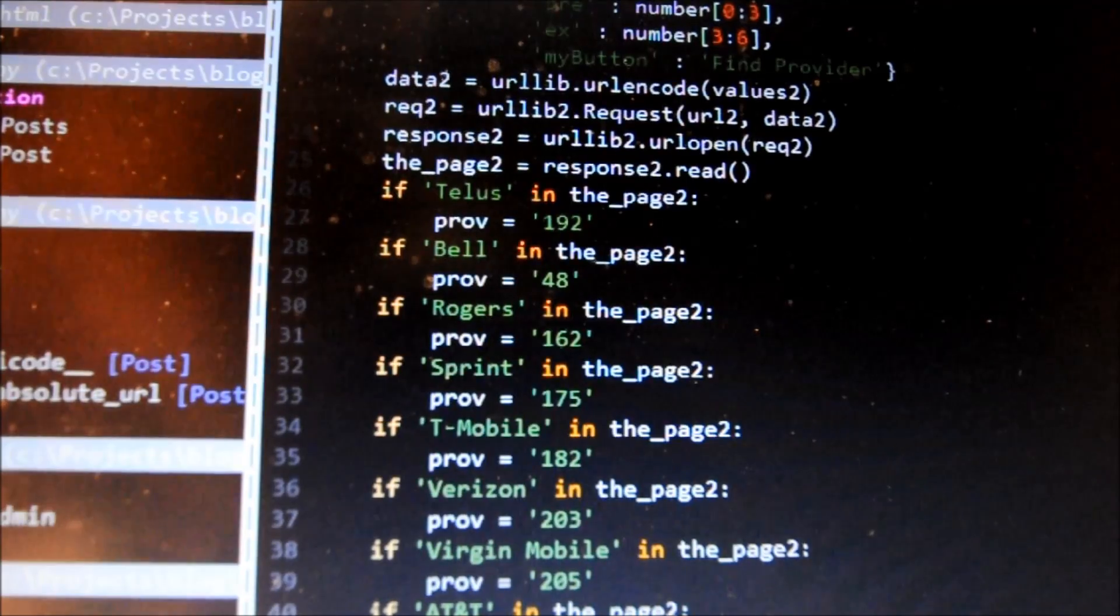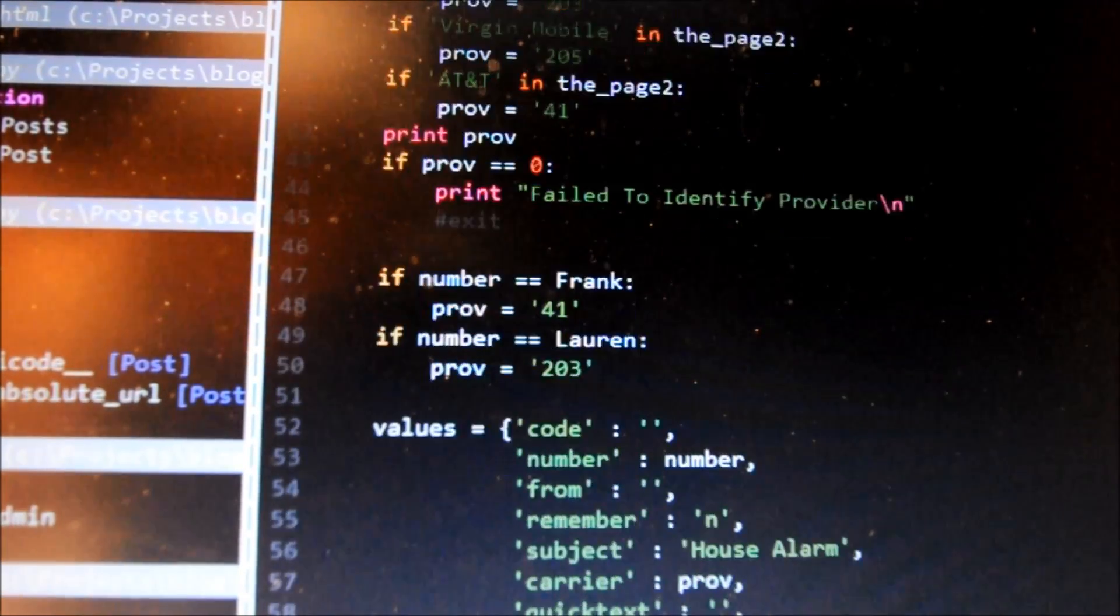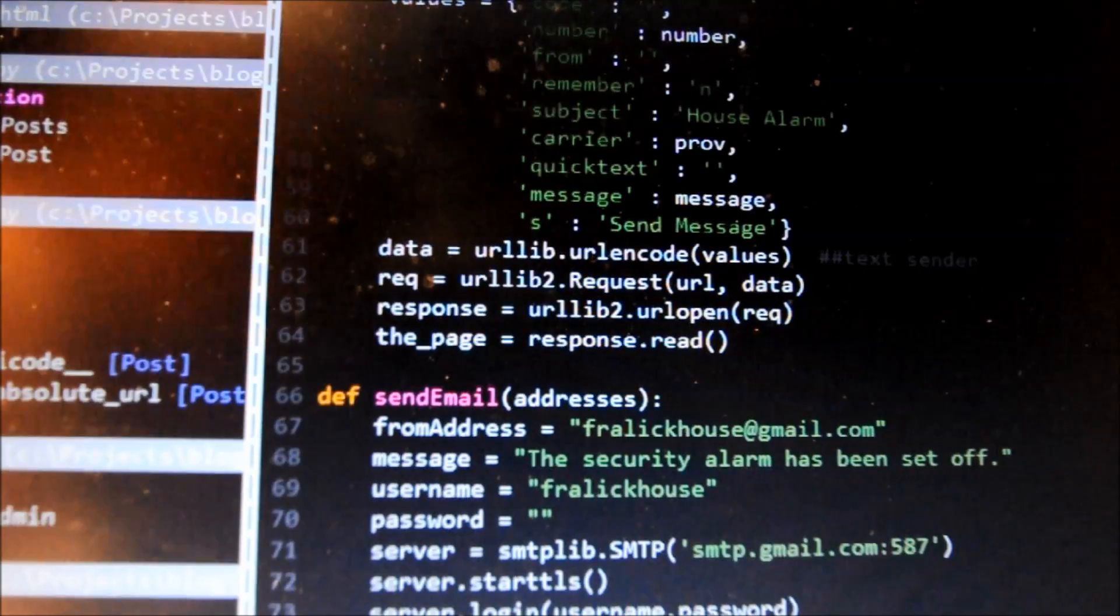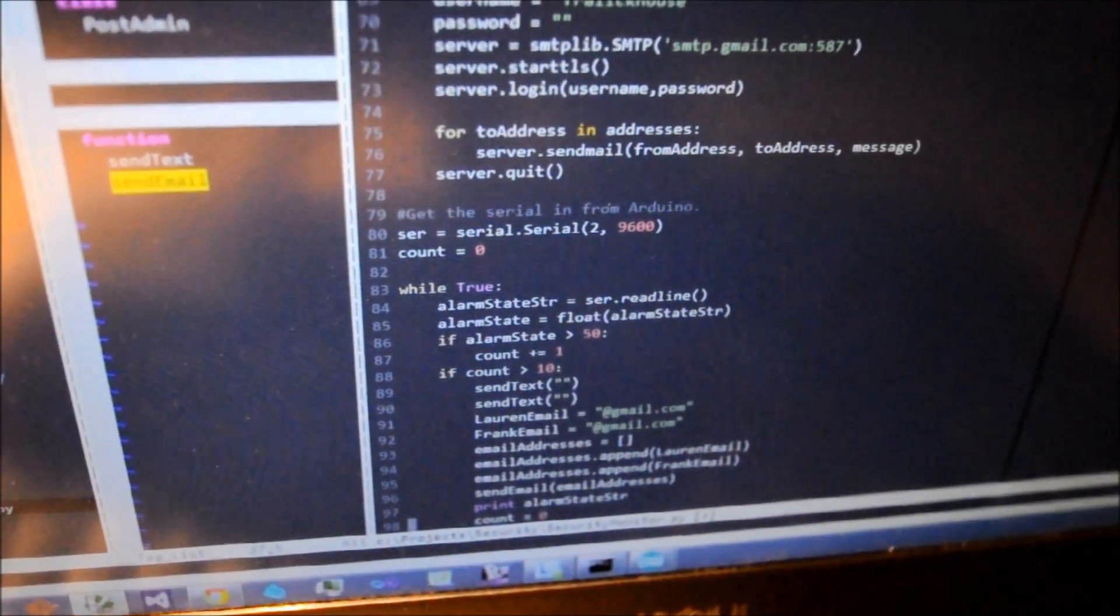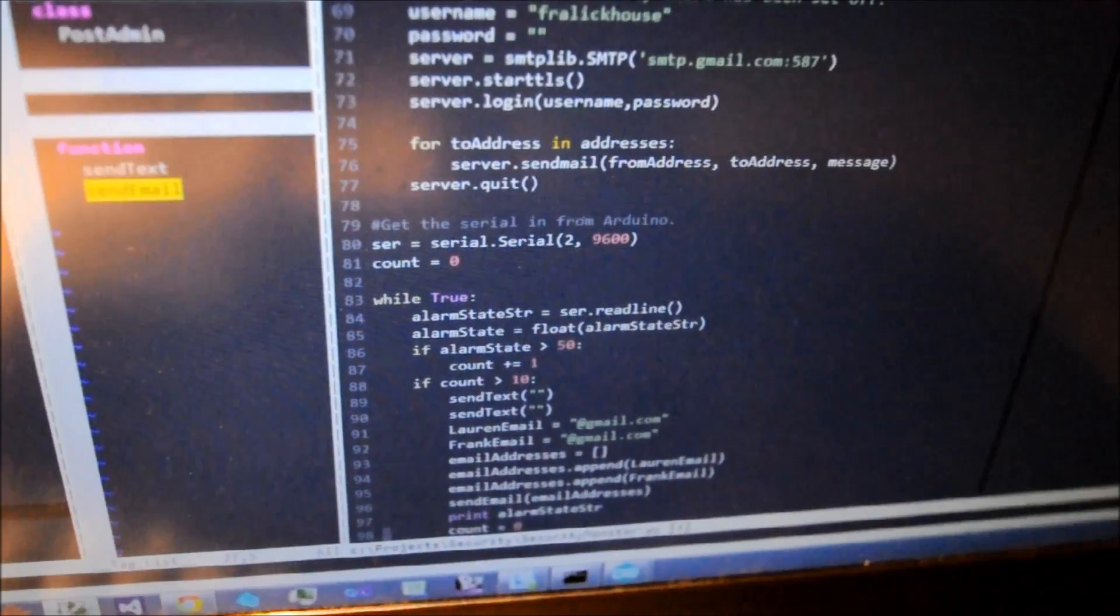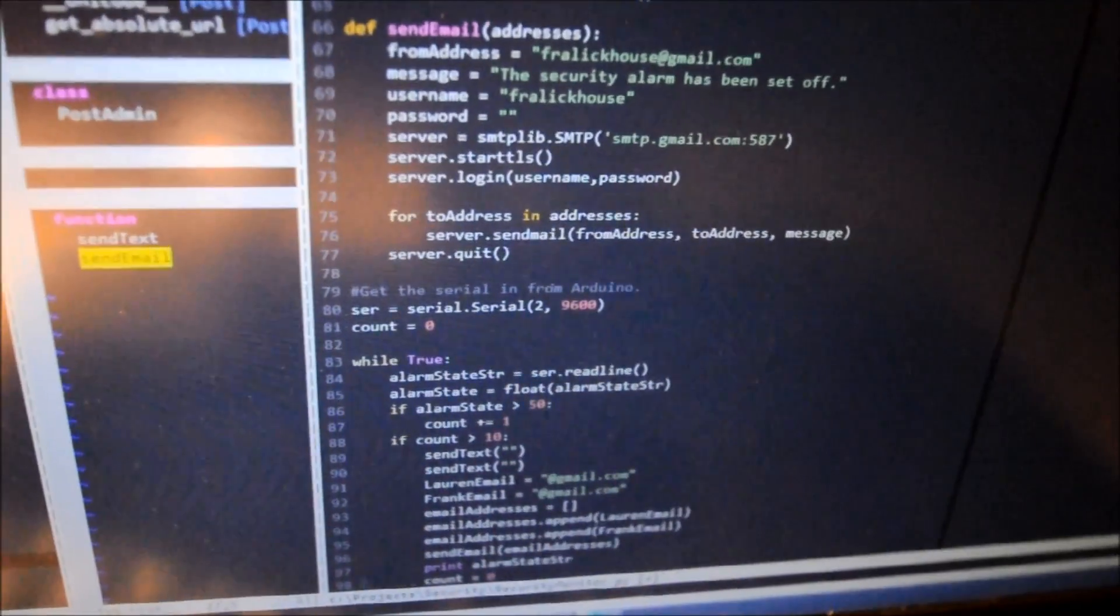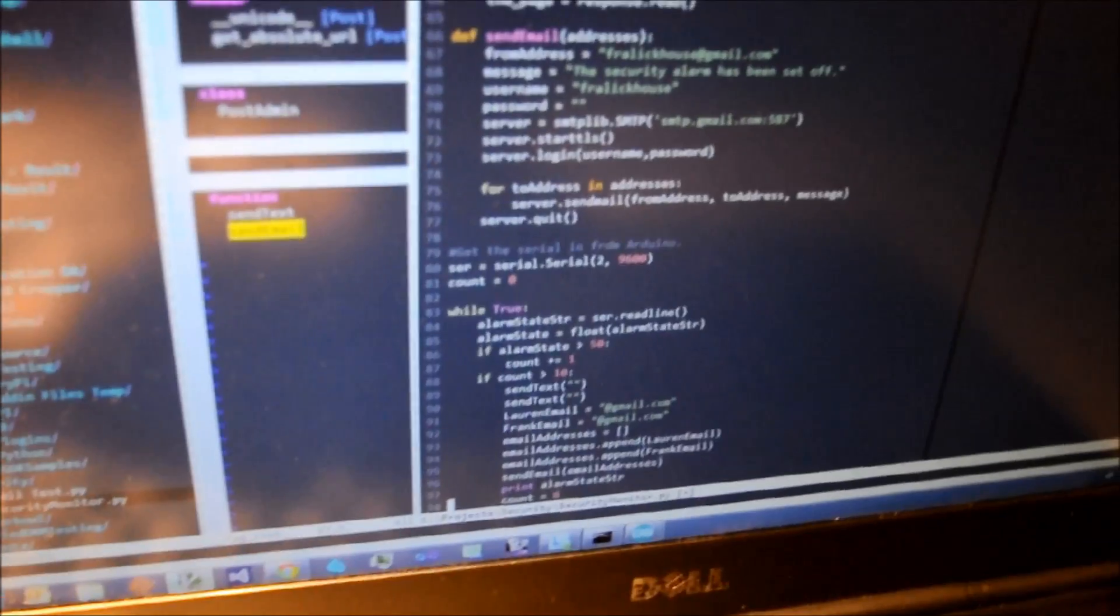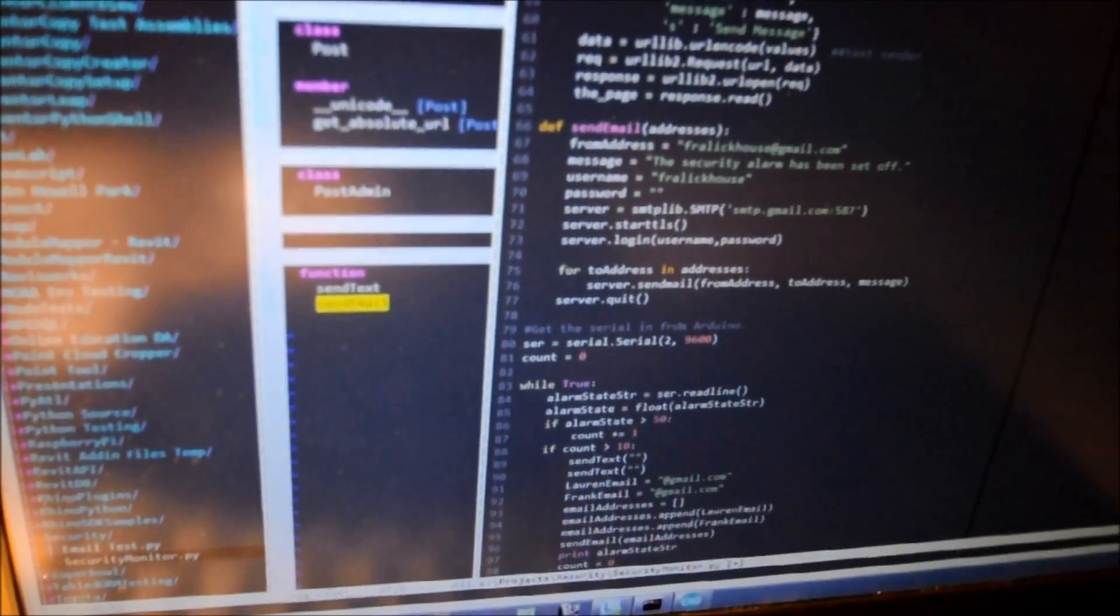The script I found has some functionality for determining the service provider. But since I know my service provider and my wife's, I just hard-coded them. 41 is for AT&T and then the other provider. And then we also have a function here for sending email. And basically what it comes down to is it just runs a while loop. And when it reaches the condition where it has the alarms going on, it waits a little while. And then if it, after a certain amount of time, if the alarm's still going off, it starts sending email and texts. So I'm going to run this with my computer instead of the Raspberry Pi just so we can watch it.